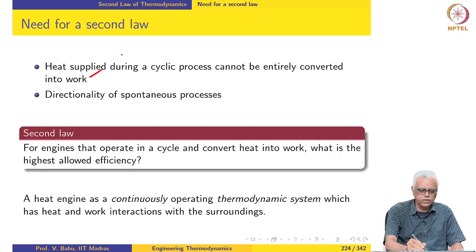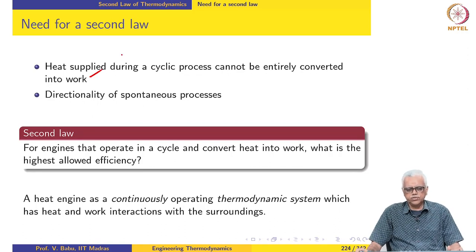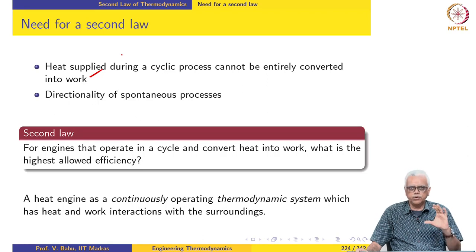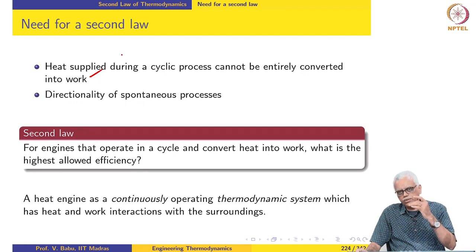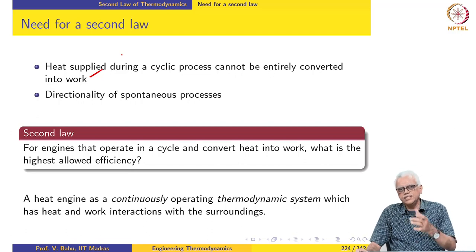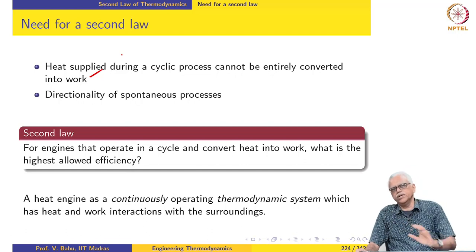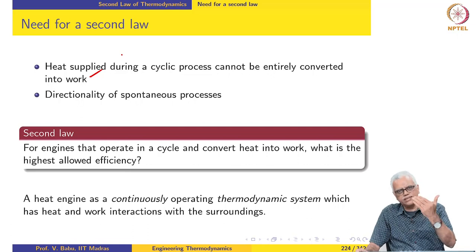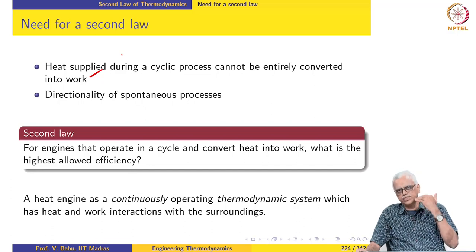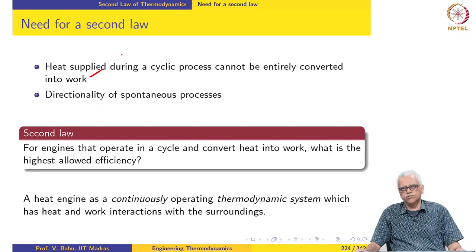We already noted that heat supplied during a cyclic process cannot be entirely converted into work. When we supply heat to a system, we are supplying energy to the internal energy of the working substance, which is a disordered mode. When we supply energy to a disordered mode and try to run a cyclic process, all of the heat cannot be converted to work. If run as a single process, we can convert all of the heat energy into work, but not in a cyclic process.